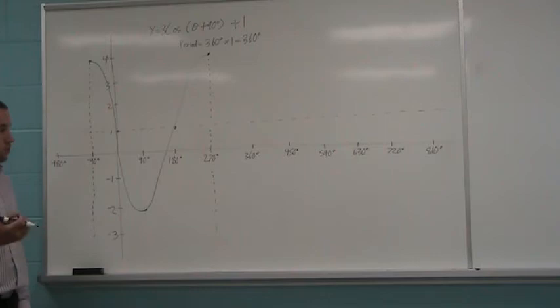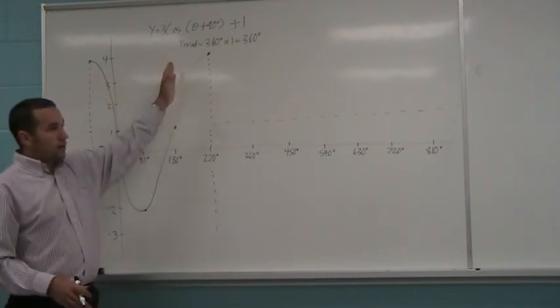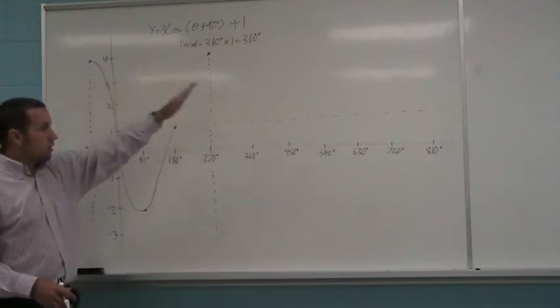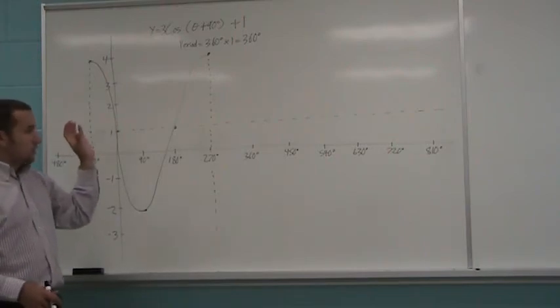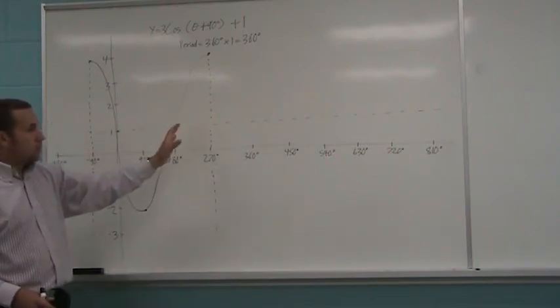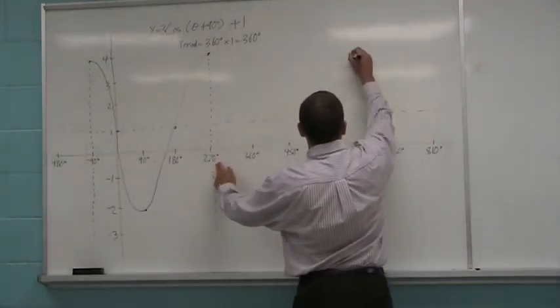Okay, if you want to draw a second one, because these go on forever. There's no restriction on the domain here, so it goes on forever in both directions. If I asked you to draw a second iteration of the cos wave, I would just simply throw in another 360 degrees, which would take me up to here.